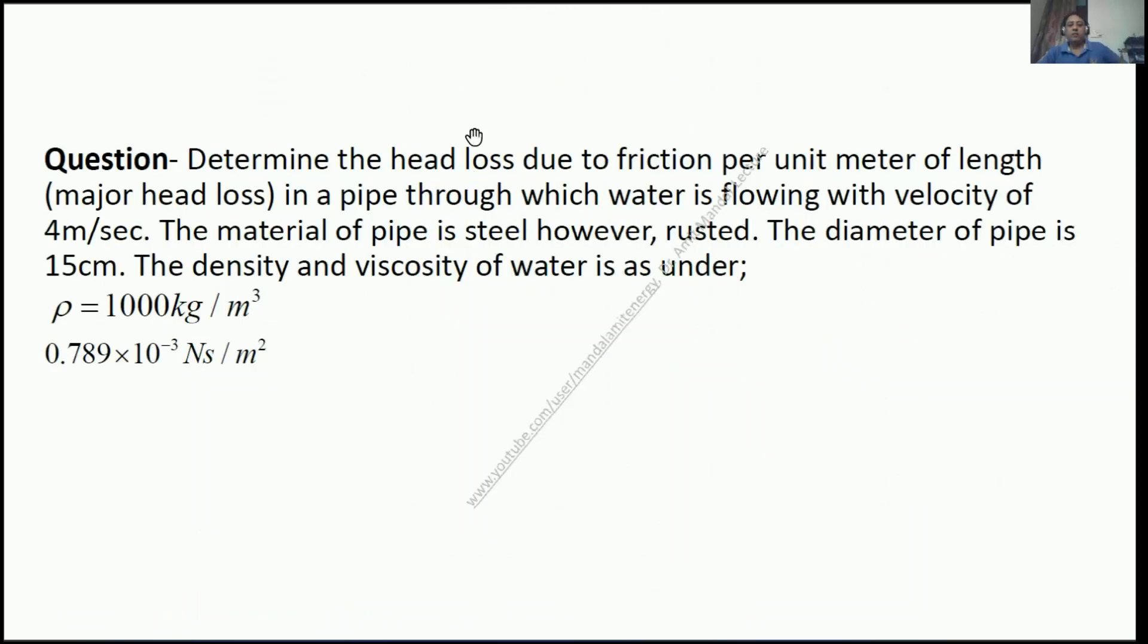Now we will take a numerical example. Determine the head loss due to friction per unit meter of length in a pipe through which water is flowing with velocity of 4 m/s. The material of pipe is steel, however it is rusted. The diameter of pipe is 15 cm, which is 0.15 m. The density of water is given as ρ = 1000 kg/m³ and viscosity is 0.789×10⁻³ Ns/m².